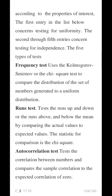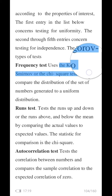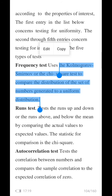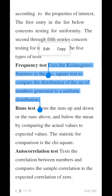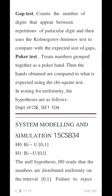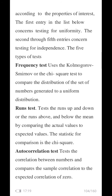Let us see the five different types of tests briefly, one by one. The first one is the frequency test, also called the chi-square test. It uses the Kolmogorov-Smirnov test or the chi-square test to compare the distribution of the set of numbers generated to a uniform distribution. Please remember this belongs to category number 1 — testing for uniformity. This is also called the chi-square test.